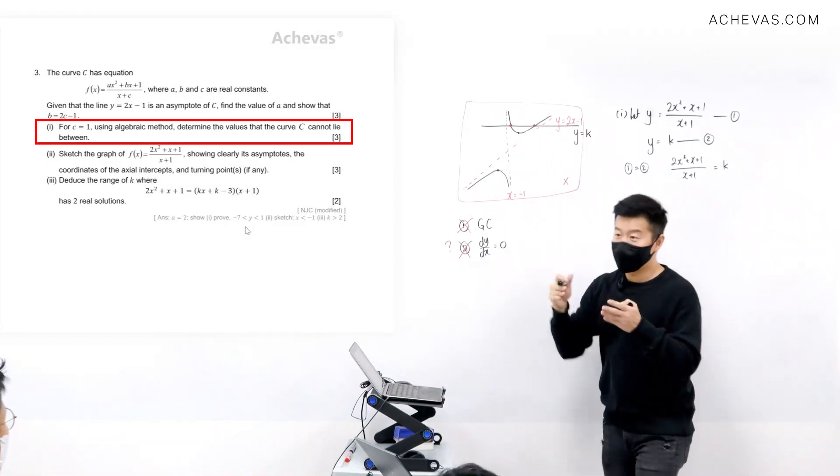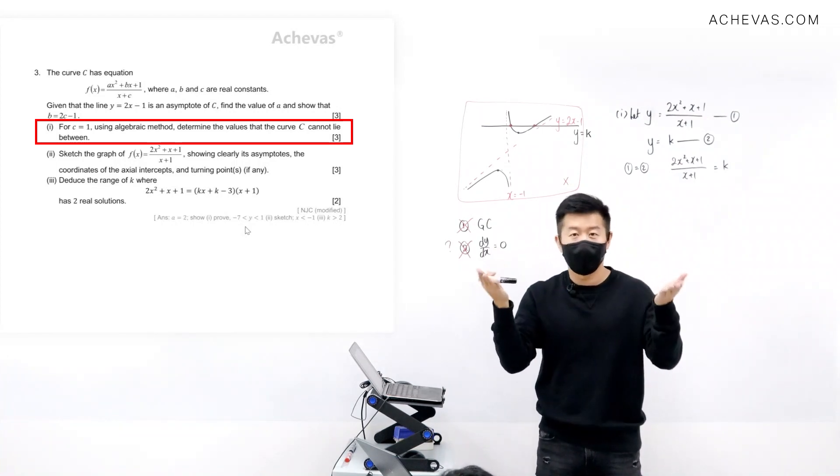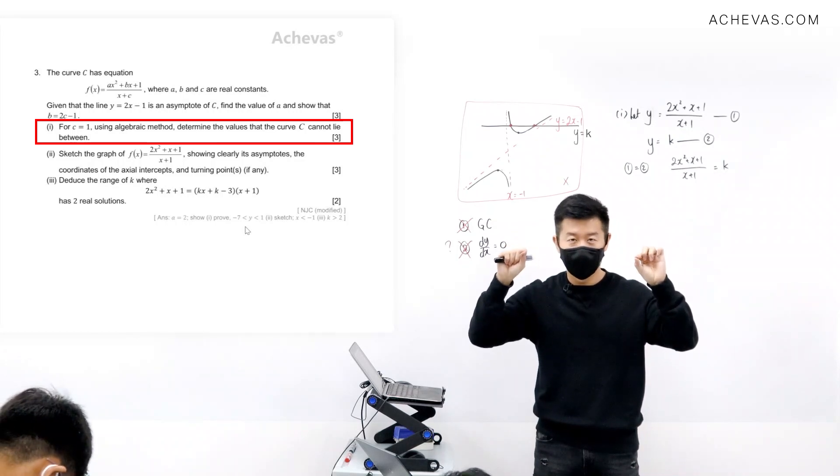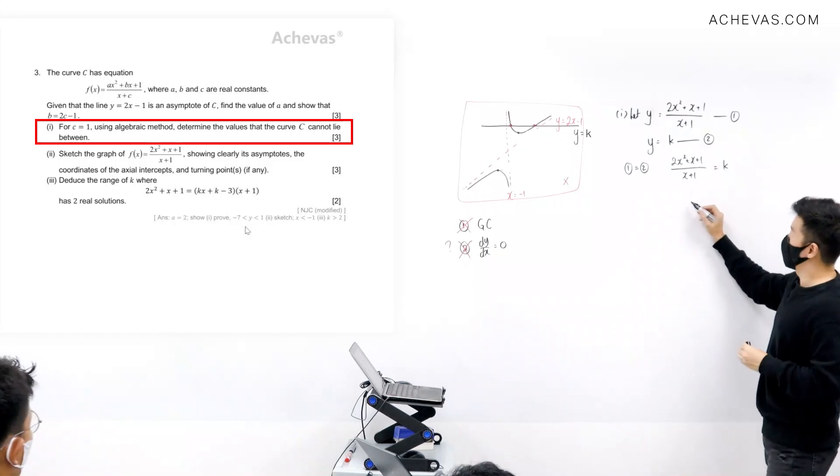Our aim is to try to find the intersection. Simultaneous equation being applied to graph is always about finding where the two graphs happen simultaneously, which is the intersection points. So I'm going to try to solve for this.